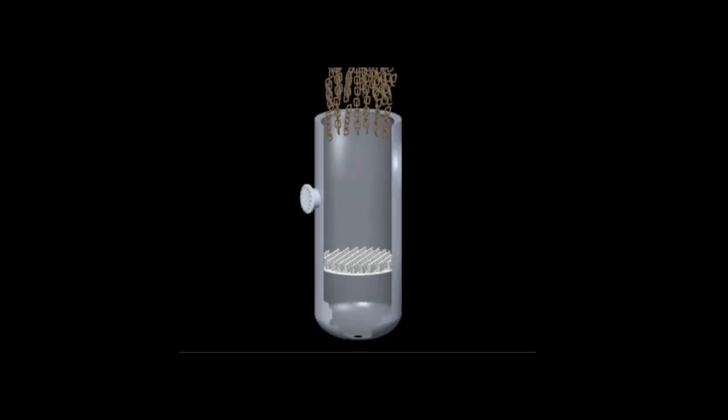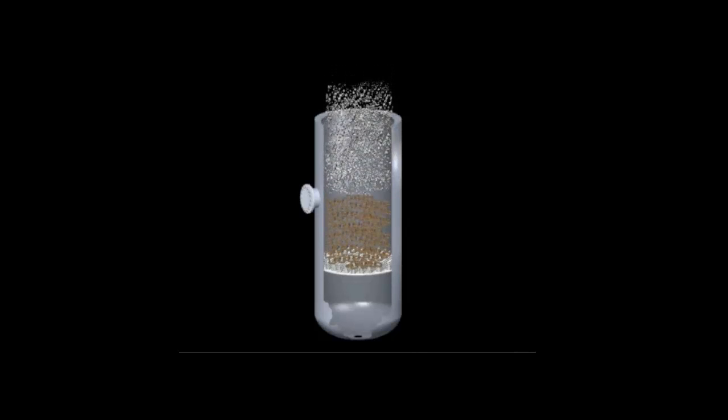Random packing has been around since the earliest days of commercial columns. Initially, extremely non-uniform packing such as crushed rock and jack chain were used.